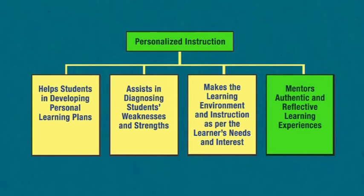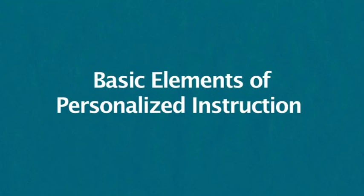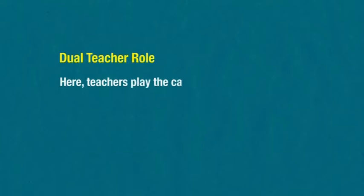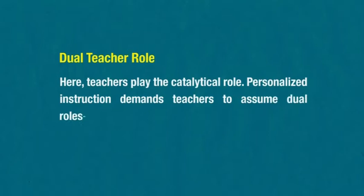Now we will discuss the basic elements of personalized instruction. Keefe and Jenkins proposed six basic elements of personalized instruction. The first is dual teacher role, where teachers play a catalytical role. Personalized instruction demands teachers to assume dual roles: one is of coach, and another is of advisor.